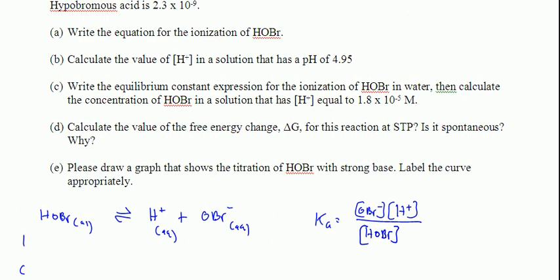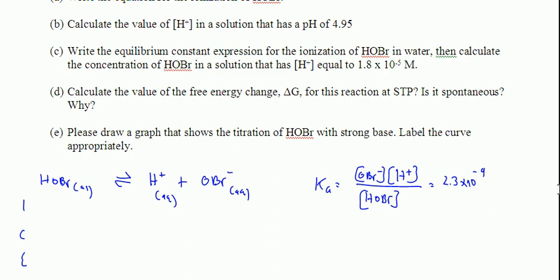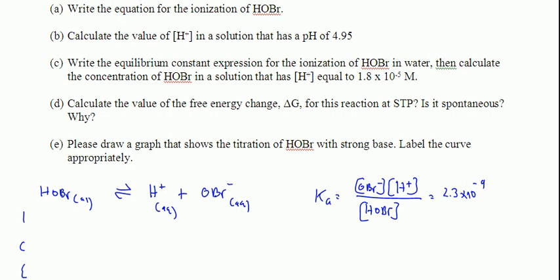Hypobromous acid is a weak acid. Okay. We know that because it's not on our list. The Ka, so that's giving me the Ka, is 2.3 times 10 to the negative 9th. All right, so we know we're going to be doing that square root business to get the answer. Write the ionization for A. Okay. There it is. That's the ionization reaction for HOBR.